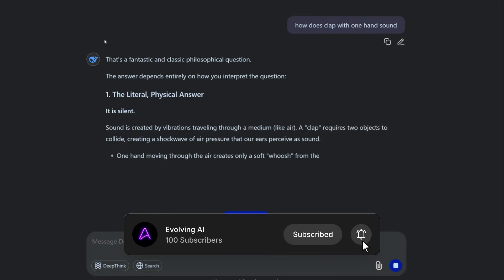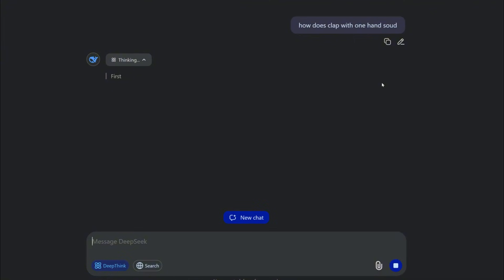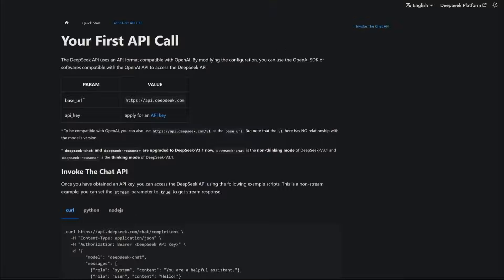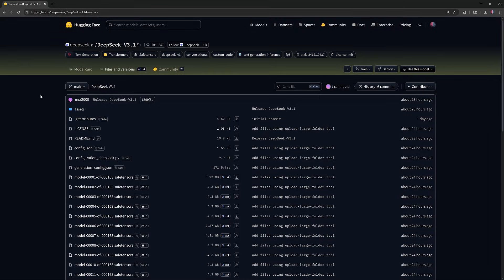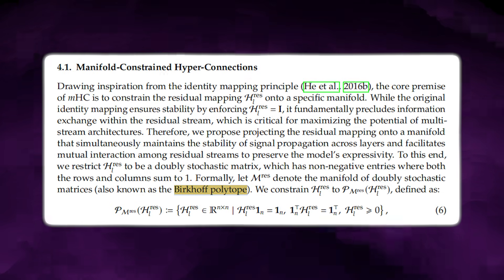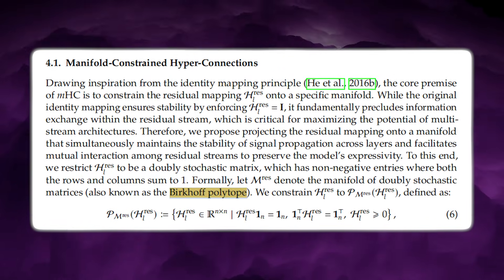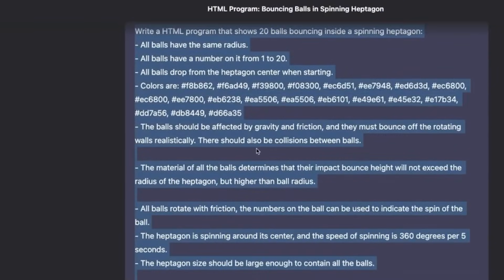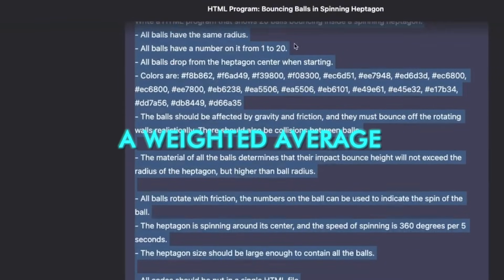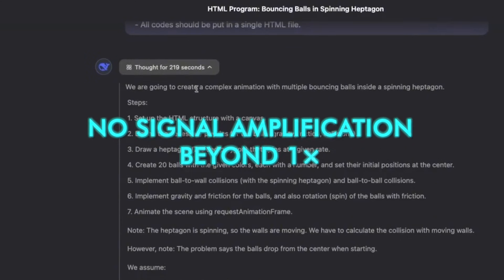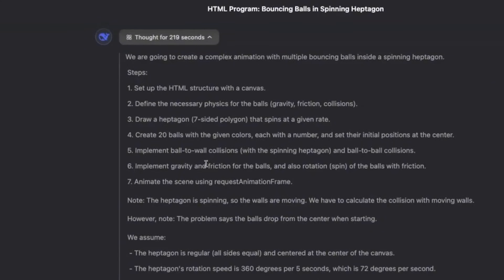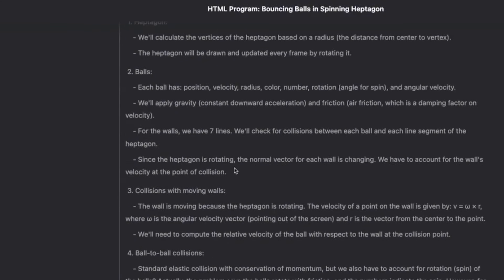DeepSeek's contribution is simple to explain, but heavy in impact. Keep the multi-stream power of HC, but force the main mixing matrix A to live inside a safe mathematical region, the Birkhoff polytope. In real terms, that means A becomes a non-negative matrix where every row and column sums to one. A weighted average. No negative cancellations. No signal amplification beyond one times. A shortcut that mixes without scaling intensity. A shortcut that behaves.